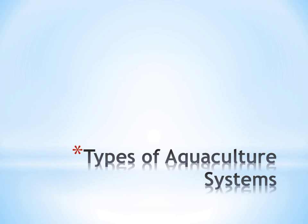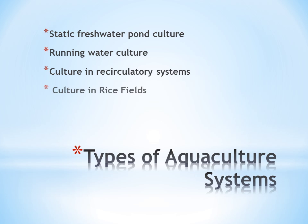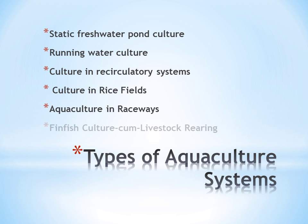What are the types of aquaculture systems that are available? Number 1: Static fresh water pond culture. Number 2: Running water culture. Number 3: Culture in recirculatory systems. Number 4: Culture in rice fields. Number 5: Fin fish and livestock rearing.